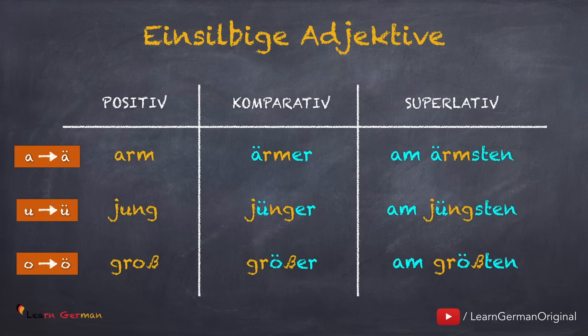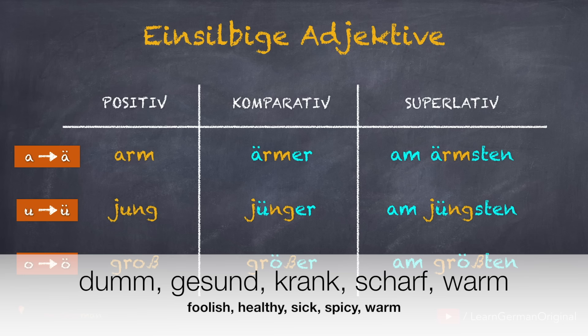Even though 'groß' ends with -ß, it doesn't take the ending -esten because it's an exception — Ausnahme. And here are some more einsilbige Adjektive — do write the Komparativ- und Superlativ-Formen in the comments below: dumm, gesund, krank, scharf, warm.